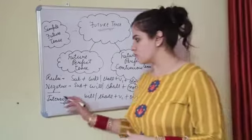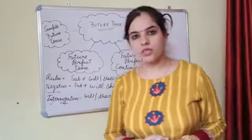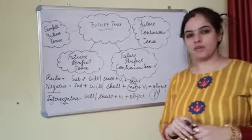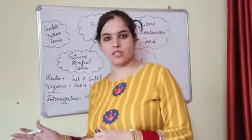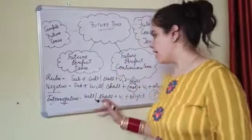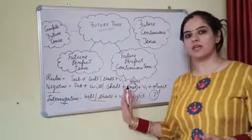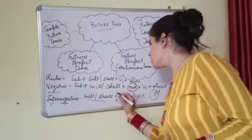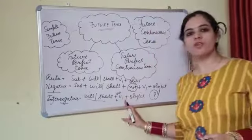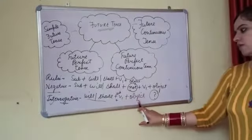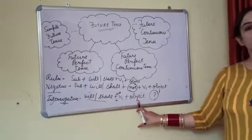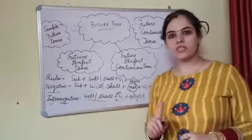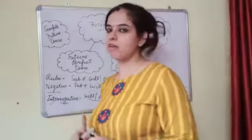And last, we discussed how to convert simple future tense into an interrogative sentence. When converting to interrogative, will or shall comes at the beginning, then you use subject, then verb first form, then object. Make sure you use a question mark in case of an interrogative sentence.